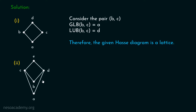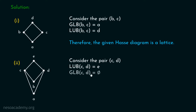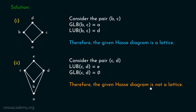Let's consider this next Hasse diagram and find out whether it is a lattice or not. Consider the pair C, D — these are incomparable elements. Least upper bound of C, D is obviously E; you can see that least upper bound of C, D is E, and this is the first meeting point. Let's find out the greatest lower bound of C, D. Greatest lower bound of C, D does not exist — it is equal to phi. Why? Because there are two first meeting points, A and B, of C and D. If we trace the path down from C and D, they meet at both A and B at the same time, and these two elements are unrelated. Hence, the greatest lower bound of C, D is equal to phi, and the given Hasse diagram is not a lattice.